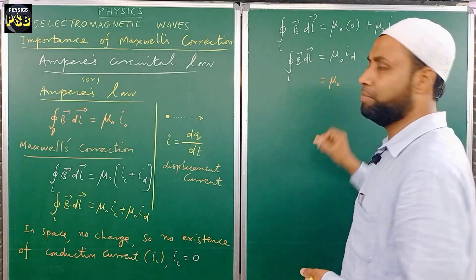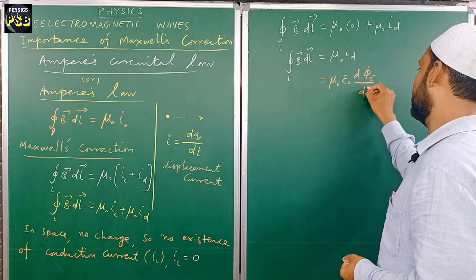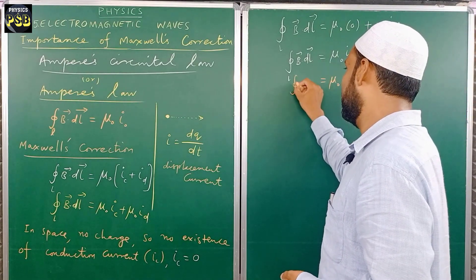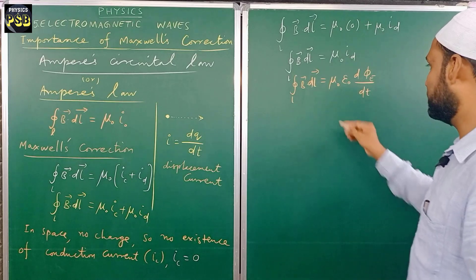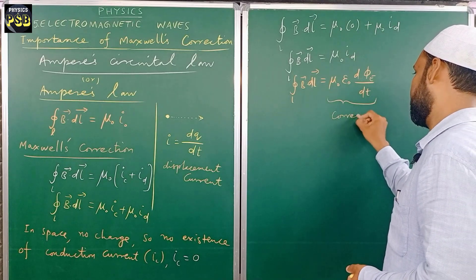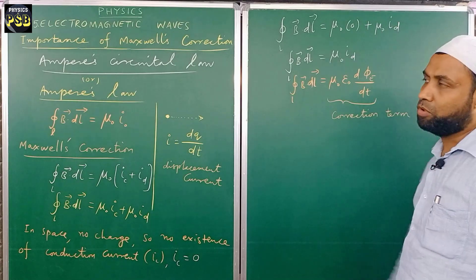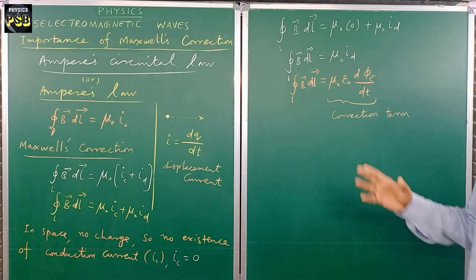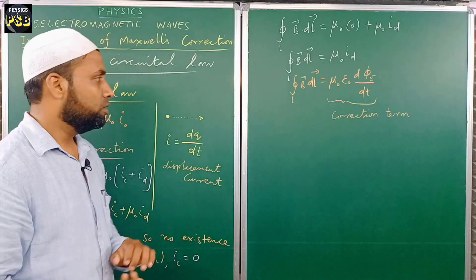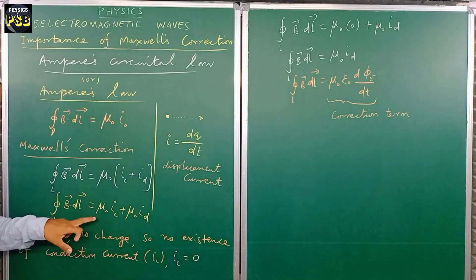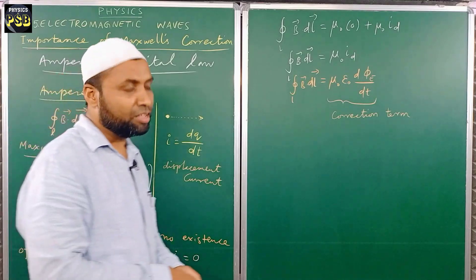In place of I-d we can write epsilon-naught times d-phi-E upon dt. This is the correction term introduced by Maxwell to Ampere's law. This clearly shows that in the absence of conduction current, displacement current produces a magnetic field.